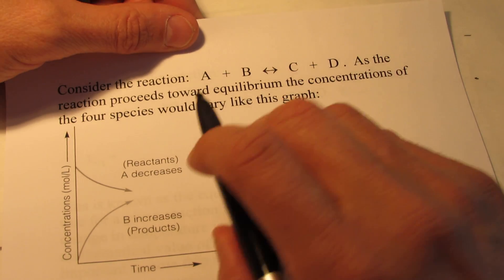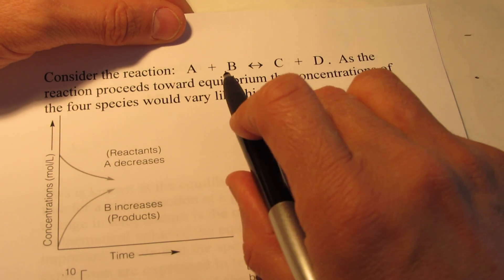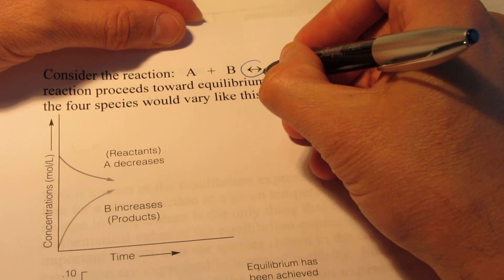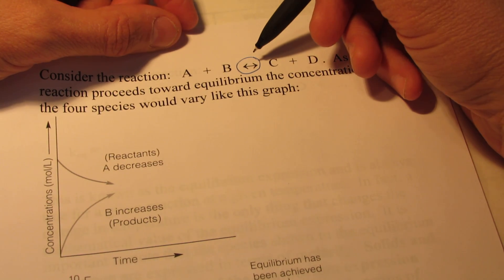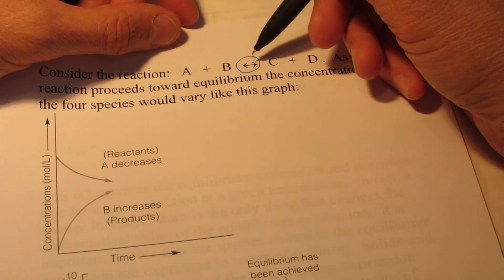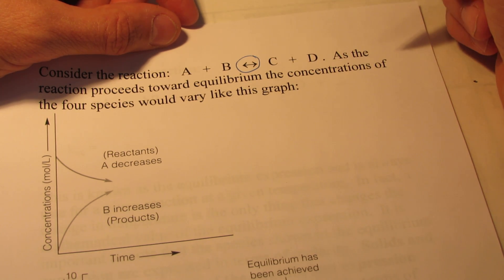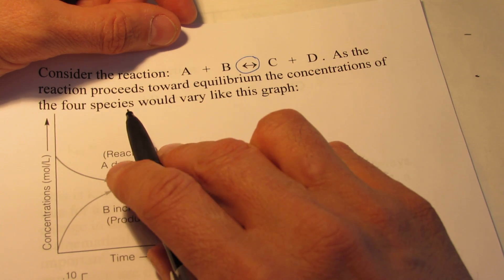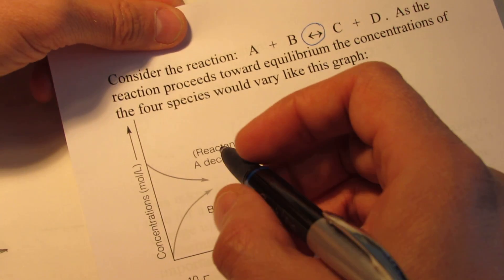So let's consider a very simple reaction. We have reactants A and B forming products C and D, and we see the arrow going both ways. Now we've seen that before — that states that the reaction has reached something called equilibrium. As the reaction proceeds towards equilibrium, the concentration of the species would vary like this graph.